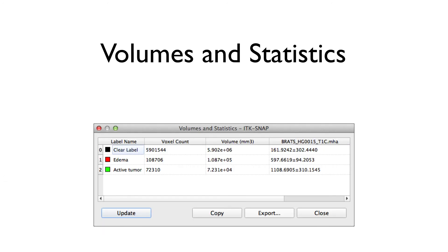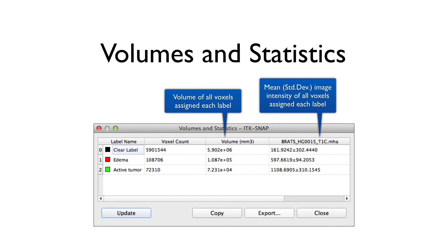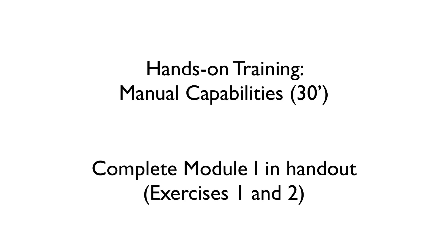The last thing you'll do in the exercise is look at volumes and statistics after completing the segmentation. The volumes and statistics window gives you the volume of all voxels assigned to each label in cubic millimeters, along with the average intensity and standard deviation intensity under each label in the MRI or CT image. That's it for the slides for the first part of the course — please turn to your handouts and do exercises 1 and 2. If you get stuck, turn to the person next to you or raise your hand and we'll come help.